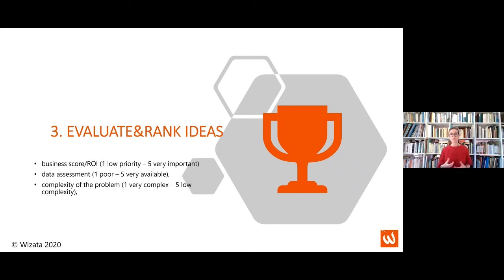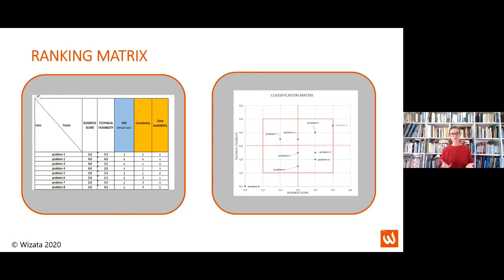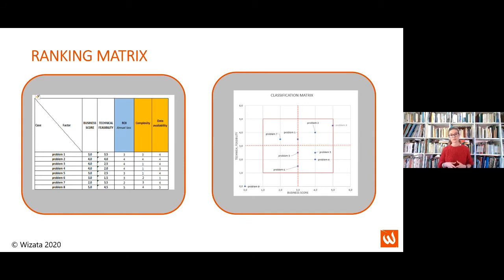Instead, try to focus on something small — like an equipment that is malfunctioning or a specific product causing quality issues. Always keep the scope limited. The ranking matrix shows, based on your evaluation scores, how complex each idea is. Ideally, you want to select a project in the top right quadrant — very high business priority but low complexity. If you'd like me to share this template, feel free to ask after the meeting.